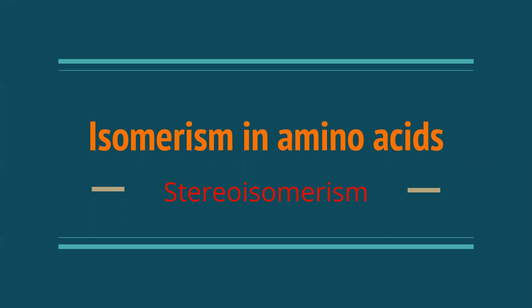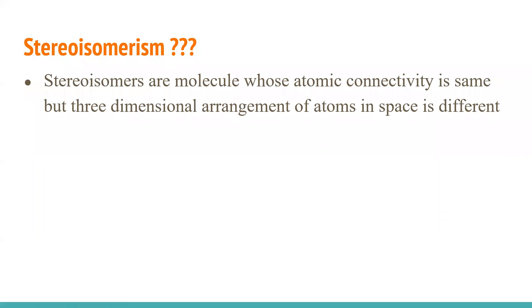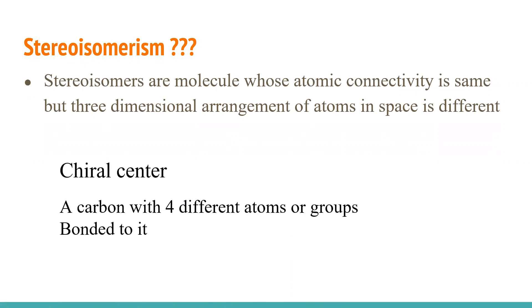Hello, welcome to a new video on the topic of isomerism in amino acids, discussing stereo isomerism. In stereo isomerism, the same amino acids exist in different forms where the atomic connectivity is the same, but the three-dimensional arrangement of atoms in space is different. That's why stereo isomers have the same structure but different spatial arrangements.